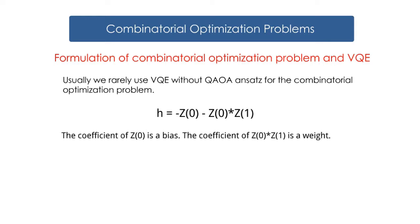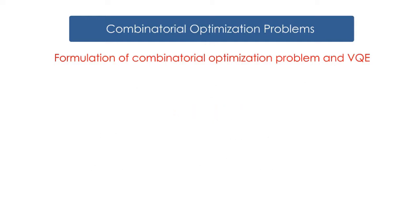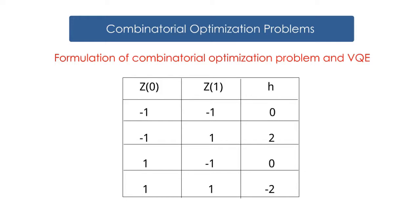And the coefficients in front of Z are important. The coefficient of Z at zeroth is a bias. The coefficient of Z at zeroth and Z at first is a weight. Now, we have both value of negative 1 as each coefficient. Z takes negative 1 or positive 1 as an expectation value. If the Hamiltonian H takes smaller value, then it will be the answer.